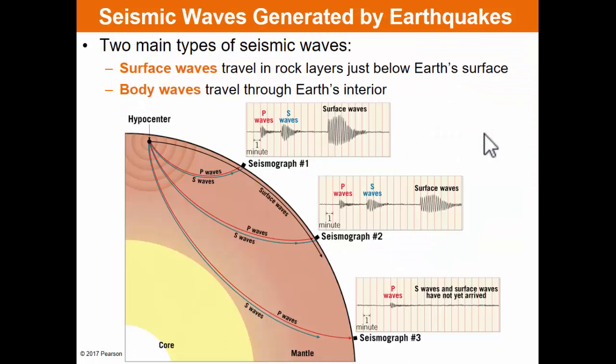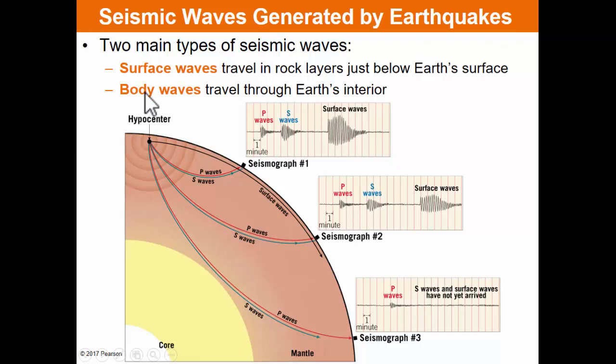There are two main types of seismic waves: surface waves that travel along the surface of the Earth, and body waves that travel through the Earth's interior. There are two types of surface waves and two types of body waves. The focus or hypocenter is where the earthquake originates, and the epicenter is directly above it on the surface. Seismic waves radiate in all directions — surface waves move along the surface, while the two types of body waves, the P wave (primary) and S wave (secondary), travel through the Earth's interior. P waves travel fastest, S waves are a bit slower, and surface waves are the slowest.